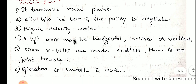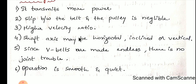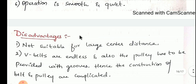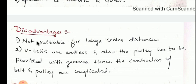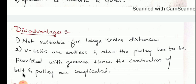As with any system, V-belt also has some limitations. First, it is not suitable for large center distances — V-belts are used for small center distances, while for large center distances we go for open-belt or cross-belt drive. Second, since V-belts are endless and the pulley must be provided with grooves, the construction of belt and pulleys is complicated. The pulley requires a V-groove, and the belt must have a trapezoidal cross-section.